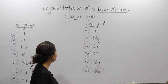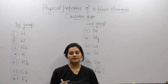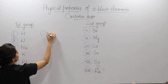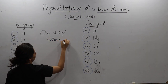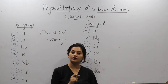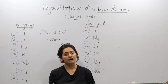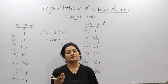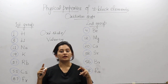Let's start. What is the oxidation state? Before moving to the oxidation state of S-Block elements, let's first understand what oxidation state means. If we talk about oxidation state, its second name is valency. Oxidation state and valency have the same meaning. This term tells us about a particular atom — how much tendency it has to lose or gain electrons to stabilize its electronic configuration.